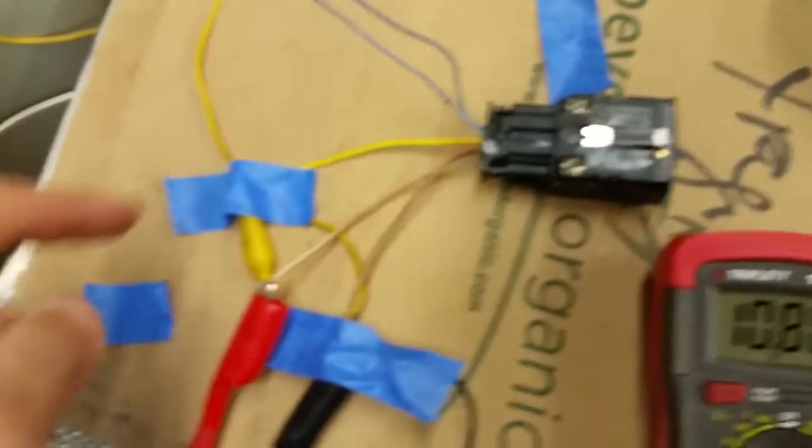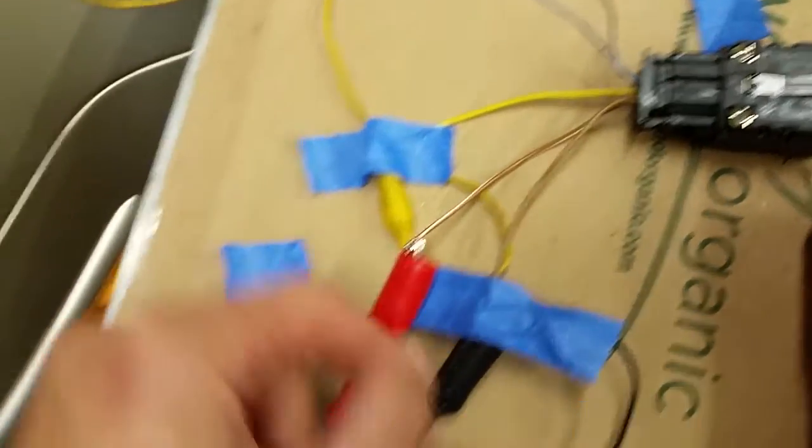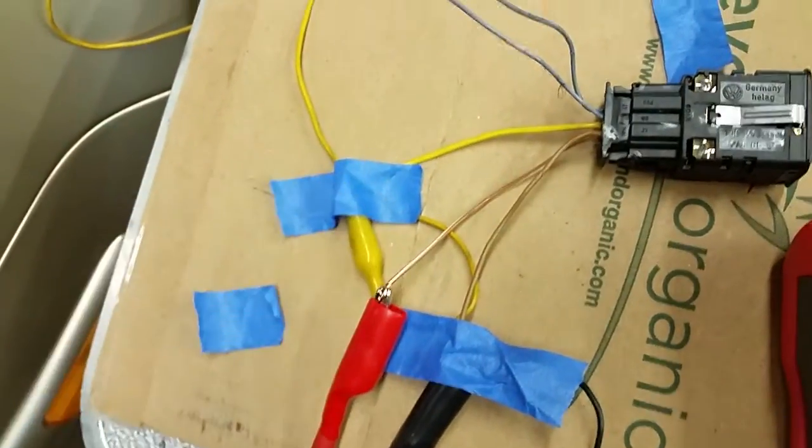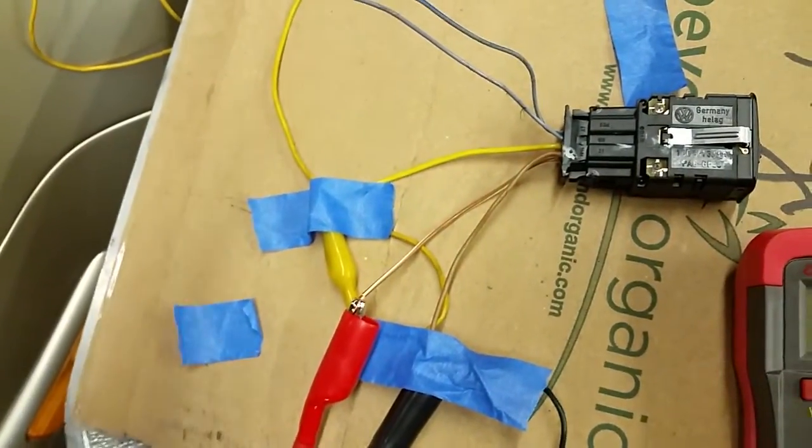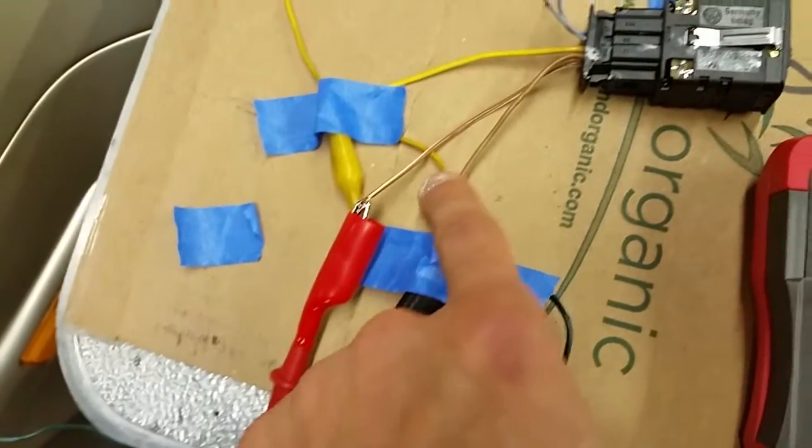So just got it set up here on the bench. Yellow is constant 12V coming into the switch, we got the brown and white wire which is the rheostat voltage and then that would go to the motors, and then we have brown which is ground.